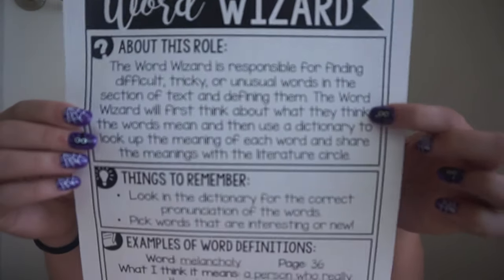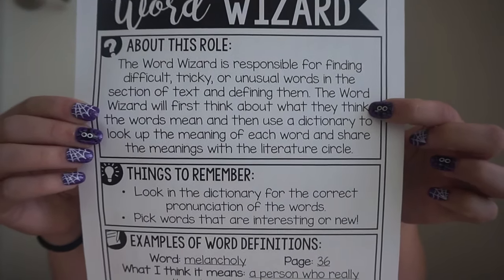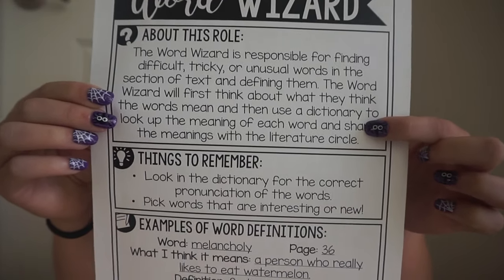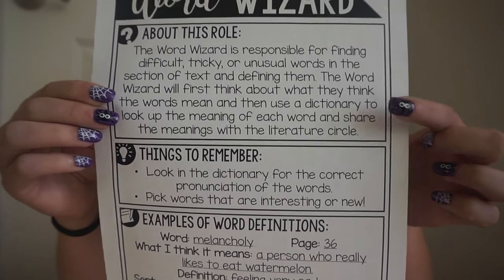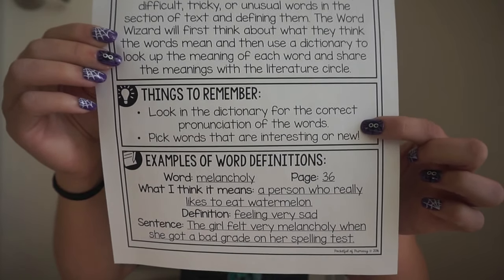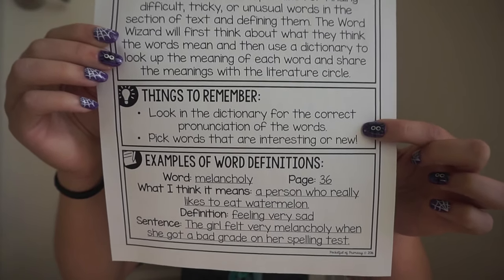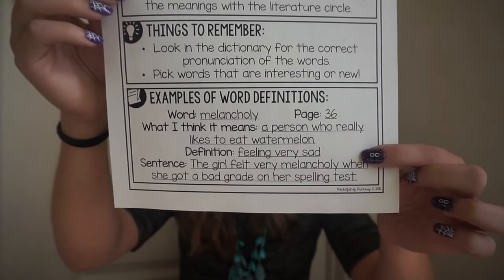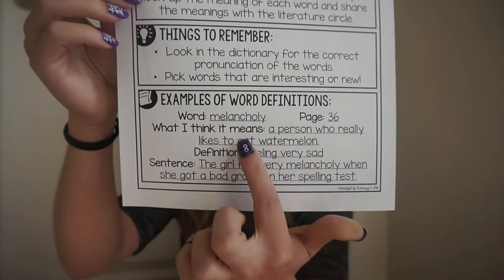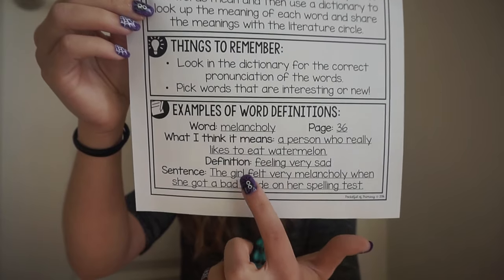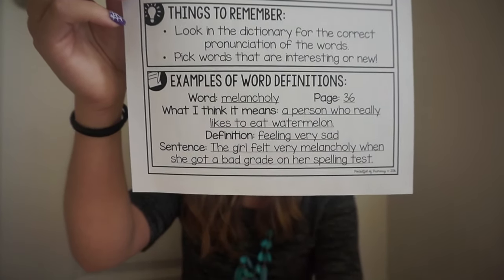For the word wizard role page, the top explains that the word wizard is responsible for finding difficult, tricky, or unusual words in the text. They first think about what they think the word means, then use a dictionary to look up the real definition and use it in a sentence. Things to remember: look in the dictionary for the correct pronunciation of the word, and pick words that are interesting or new. The example at the bottom shows finding the word, recording the page number, writing what they think it means, the dictionary definition, and using it in a sentence.